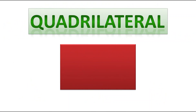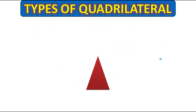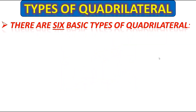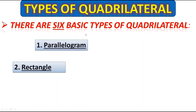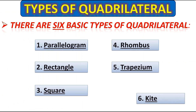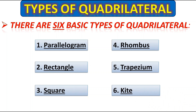Now we will learn about quadrilaterals. As you all know, a quadrilateral is a shape which has four sides. Let's see the types of quadrilaterals. There are six basic types: parallelogram, rectangle, square, rhombus, trapezium, and kite. Let's learn one by one.